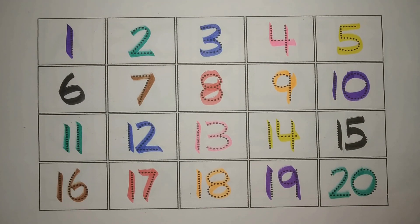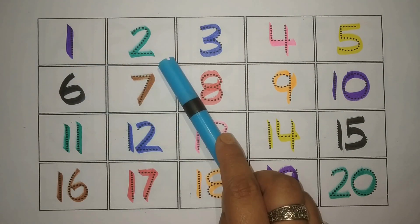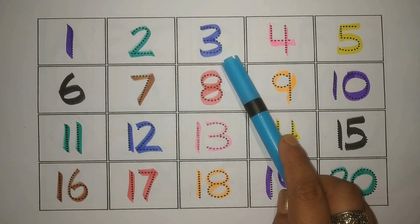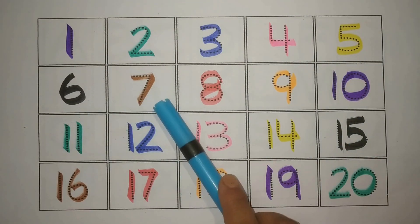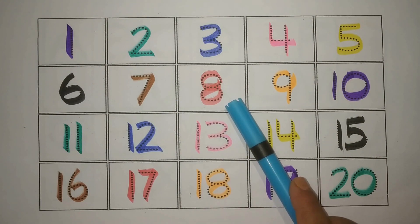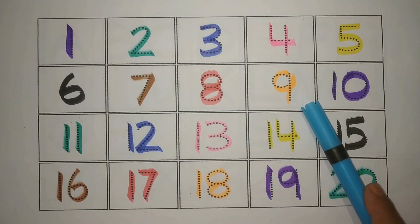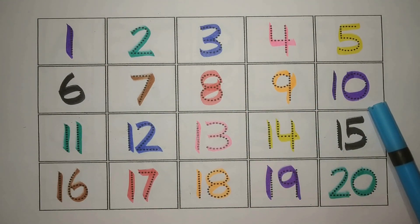Let's revise. Chalo phir se karte hai. One purple, two green, three blue, four pink, five yellow, six black, seven brown, eight red, nine orange, one zero ten purple.